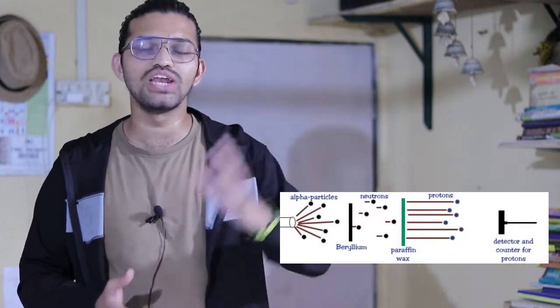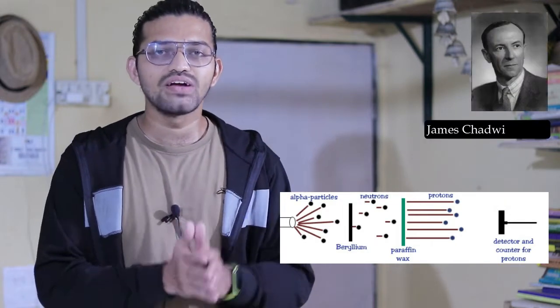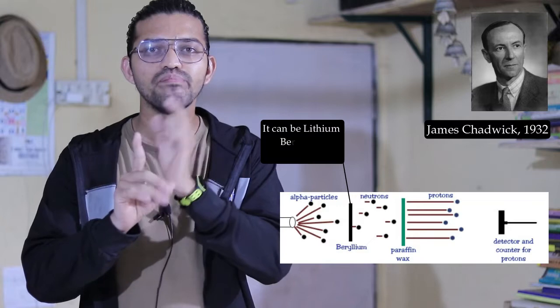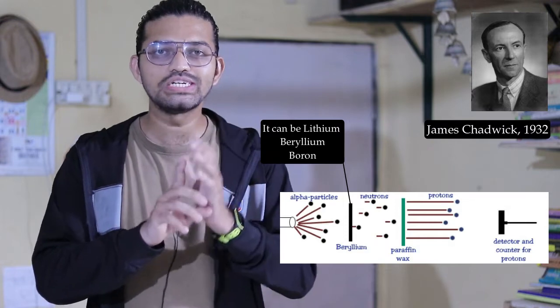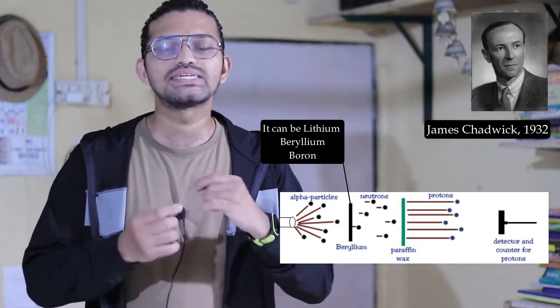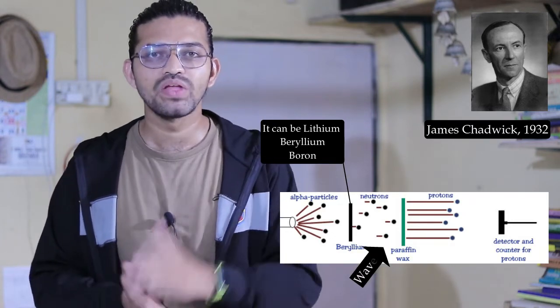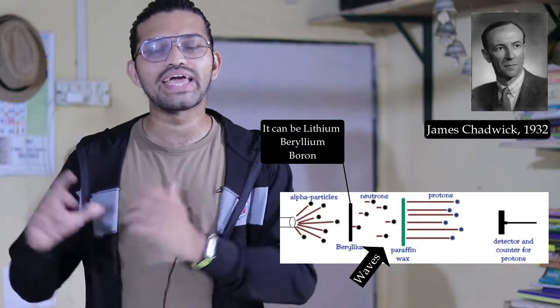This discovery was confirmed in 1932 when Sir James Chadwick conducted a scattering experiment very similar to Ernest Rutherford's gold foil experiment. Chadwick bombarded alpha particles on thin sheets of lithium, beryllium, and boron. After this bombardment, these thin sheets started releasing waves. These waves contained some particles, carried no charge, and were neither electromagnetic waves nor gamma waves.